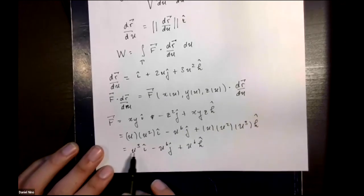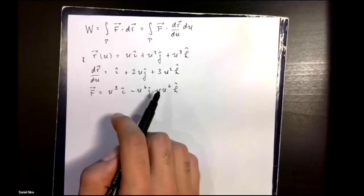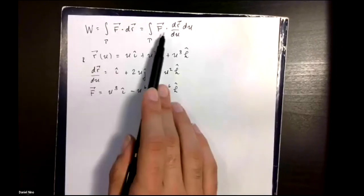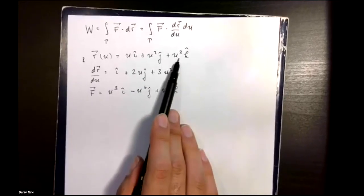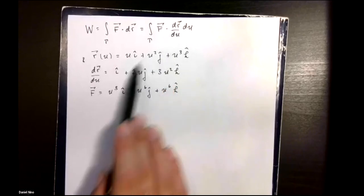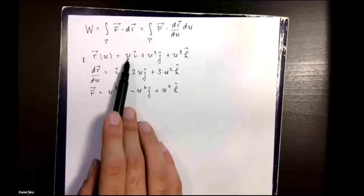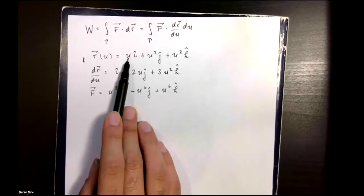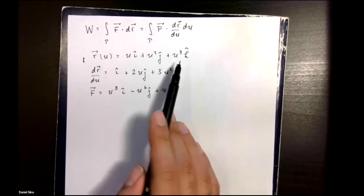This is our new expression for the force under the parametrization of our curve. These are the details that we need. We're trying to calculate the work using this equation. This is the parametric representation of our curve, this is the derivative, and this is our force with x, y, and z represented according to this equation.